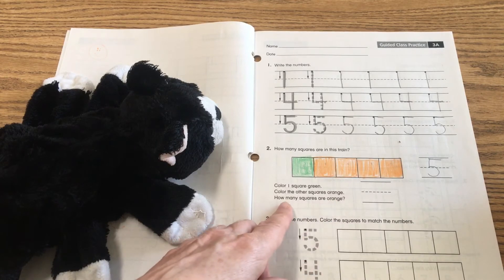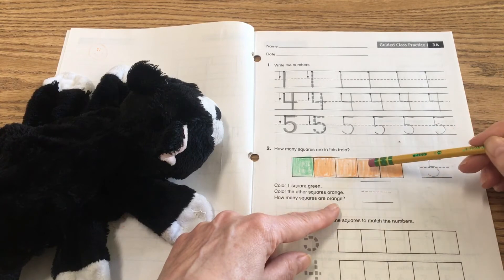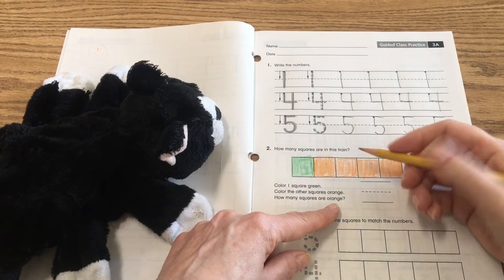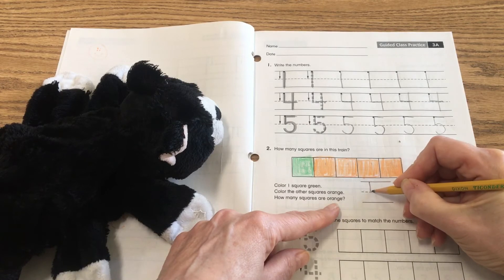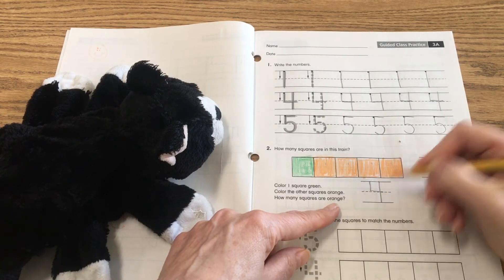So the last question says, how many squares are orange? So I can go back and count. One, two, three, four. And so I'm going to write my four right here. Remember, start at the top, go down, over, lift, start at the top, and go down. Okay.